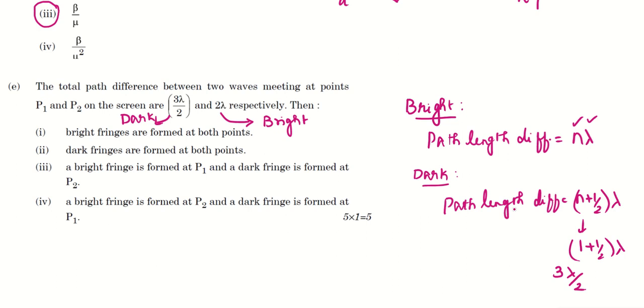So P1 is dark and P2 is bright. So bright fringe is formed at P2, dark fringe is formed at P1. So this should be the correct answer.